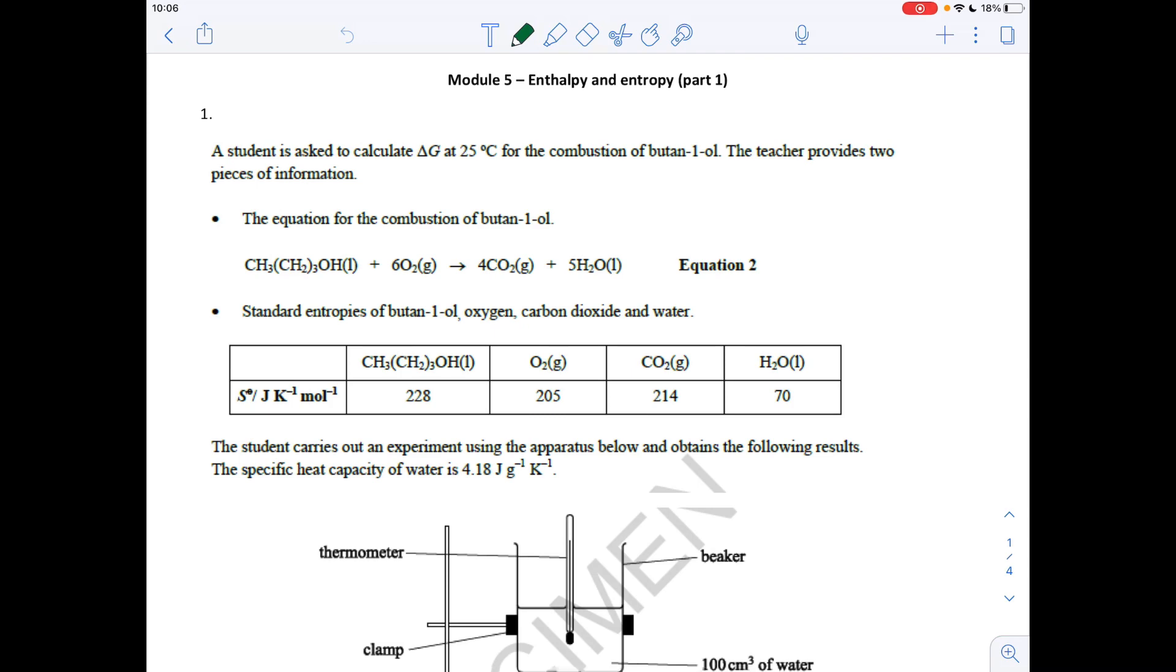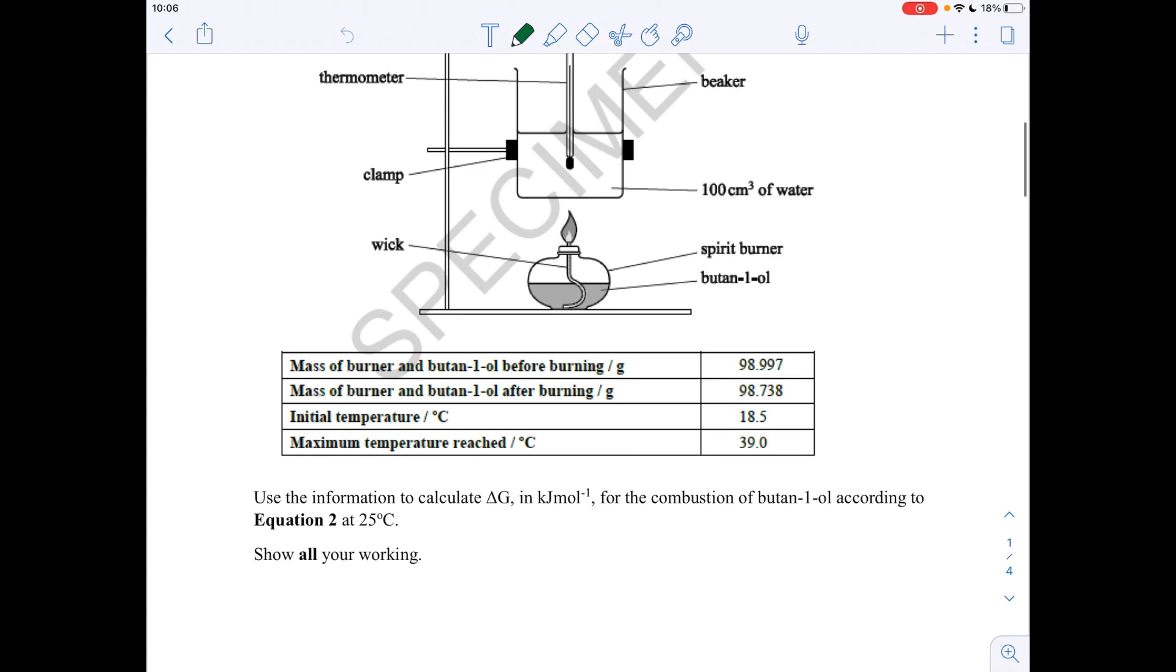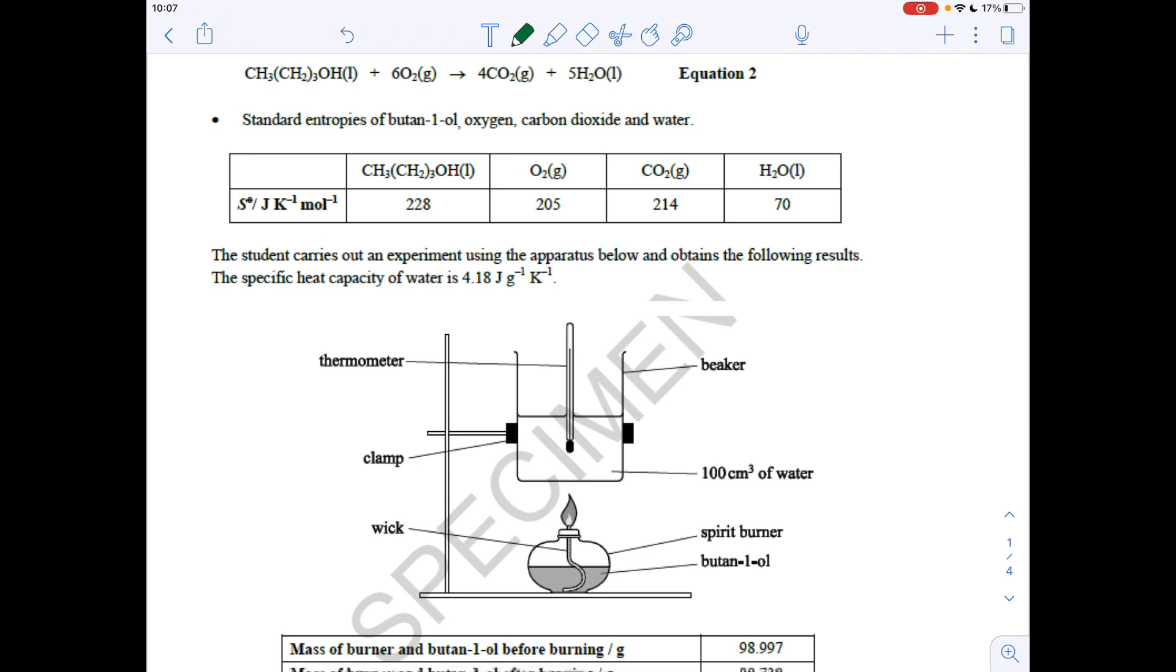Okay, so this first question here, we've got to calculate the delta G in kilojoules per mole for the combustion of butan-1-ol. So obviously what we've got to calculate is the Gibbs equation: delta G equals delta H minus T delta S. We're going to calculate delta H from this calorimetry information about the spirit burner experiment, and we're going to calculate delta S from that table of standard entropies. And then once we've got that, we can work out delta G.